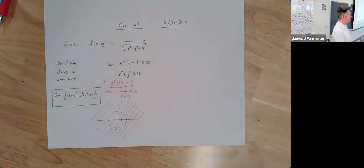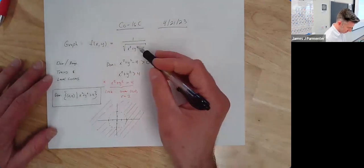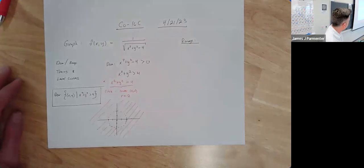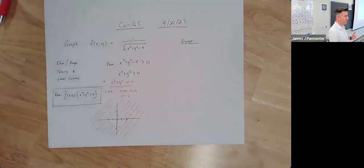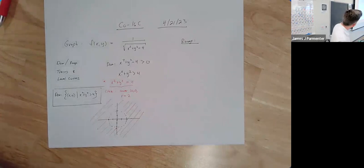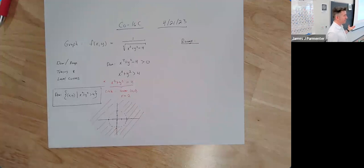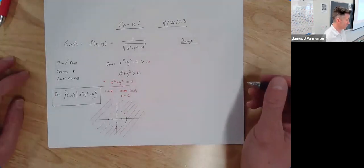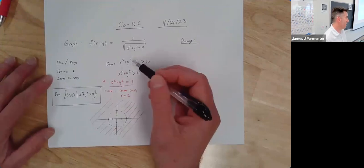The range, on the other hand, is always a little dicey. I'm really just thinking about how big and how small can my function get. I've got a fraction, and fractions get big when the denominator gets really close to zero, and fractions get small when the denominator gets really, really large. That denominator can get as large as I want — let x be a billion and y be two billion, and I get one over something incredibly large, which is super close to zero, but not equal.